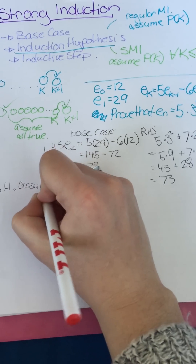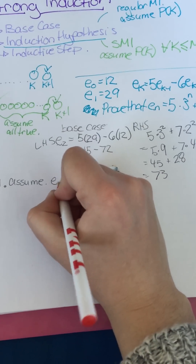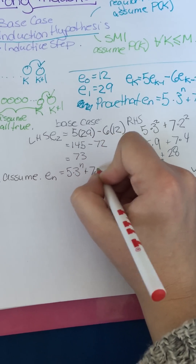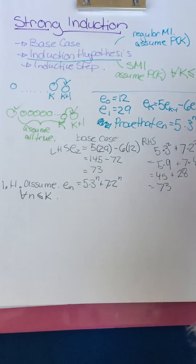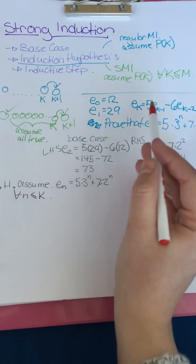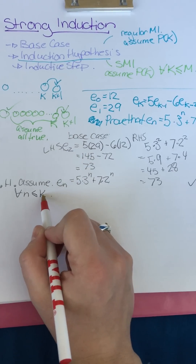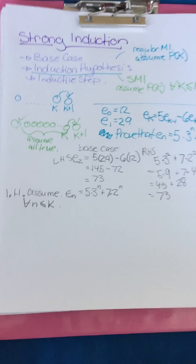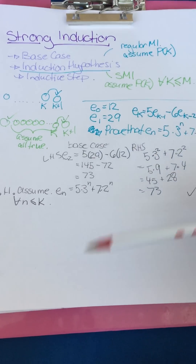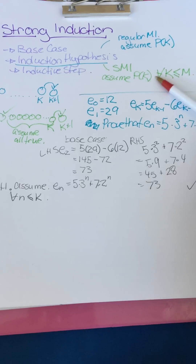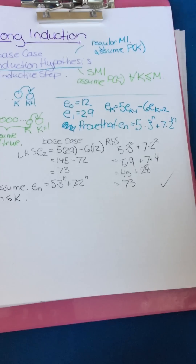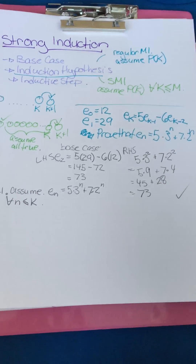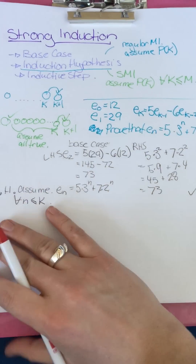Now we set up the induction hypothesis. Assume Eₙ = 5·3ⁿ + 7·2ⁿ for all n less than or equal to k. Note that the variable names — k or m — don't really matter as long as you keep things consistent within the problem.